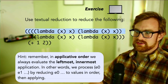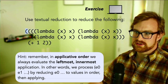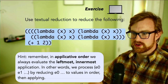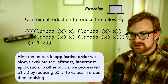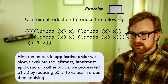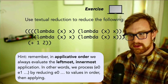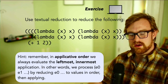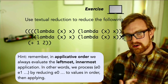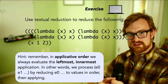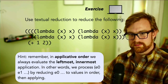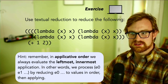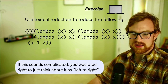Now let's carry out a larger exercise: use textual reduction to reduce the following expression to a value. Remember, in applicative order we always evaluate the leftmost, innermost application. If we have a call site e0, e1, ..., we first reduce e0 to an actual lambda, then reduce all arguments to values, then perform the application. Intuitively, you can think of this as evaluating things in left-to-right order.